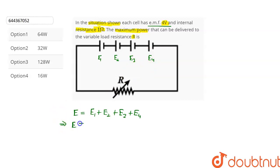The internal resistance of each cell is 1 ohm, so the total internal resistance r will be equal to 1 × 4 which is 4 ohms.